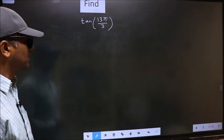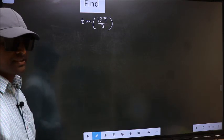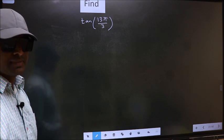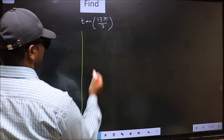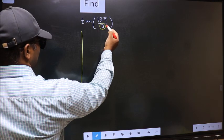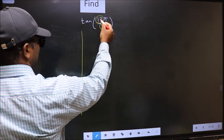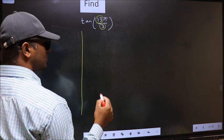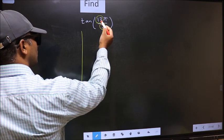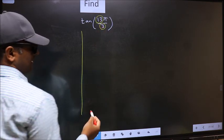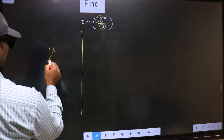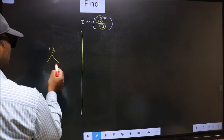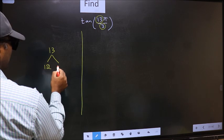To find tan(13π/3), we should follow this method. In the denominator we have 3, in the numerator 13. Now you should check which multiple of 3 is closest to 13. Write the multiples of 3: that is 12 and 15.